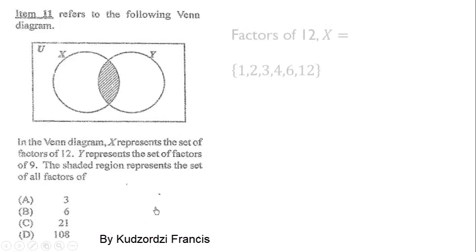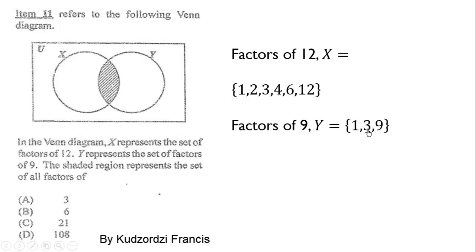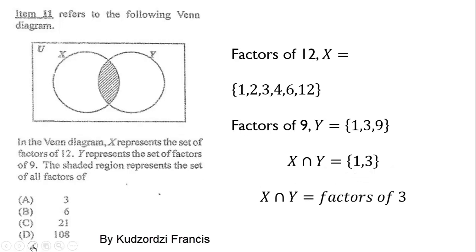We must first find the intersection. The factors of 12 are 1, 2, 3, 4, 6, and 12. The factors of 9 are 1, 3, and 9. The shaded region is the intersection of X and Y, which gives us 1 and 3. These are the factors of 3, therefore the correct answer is A.